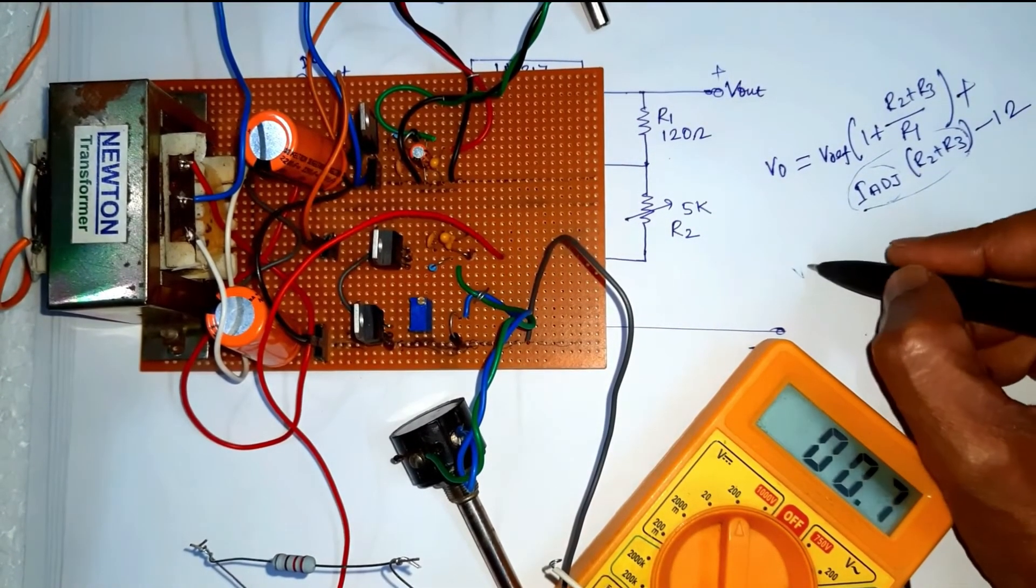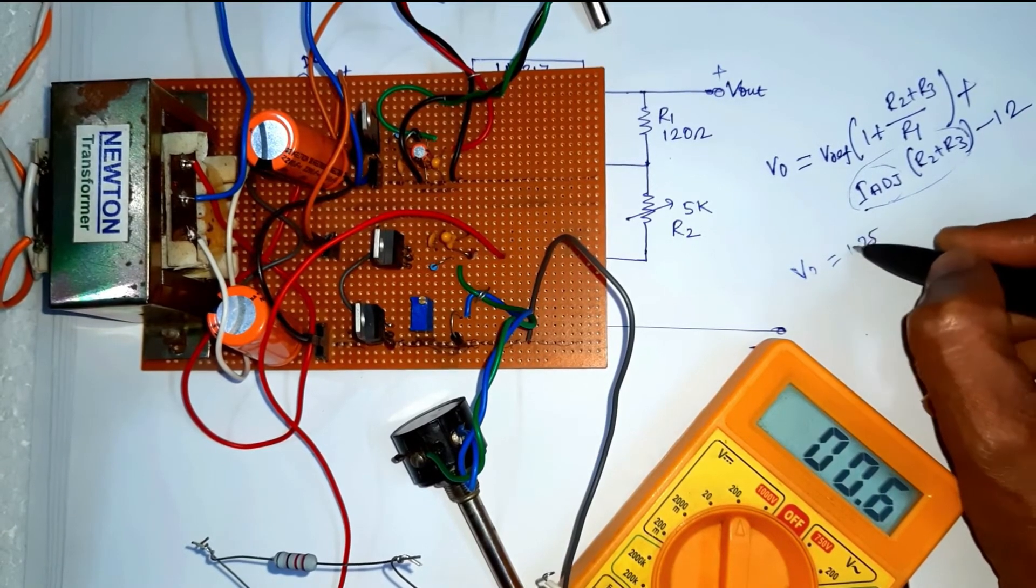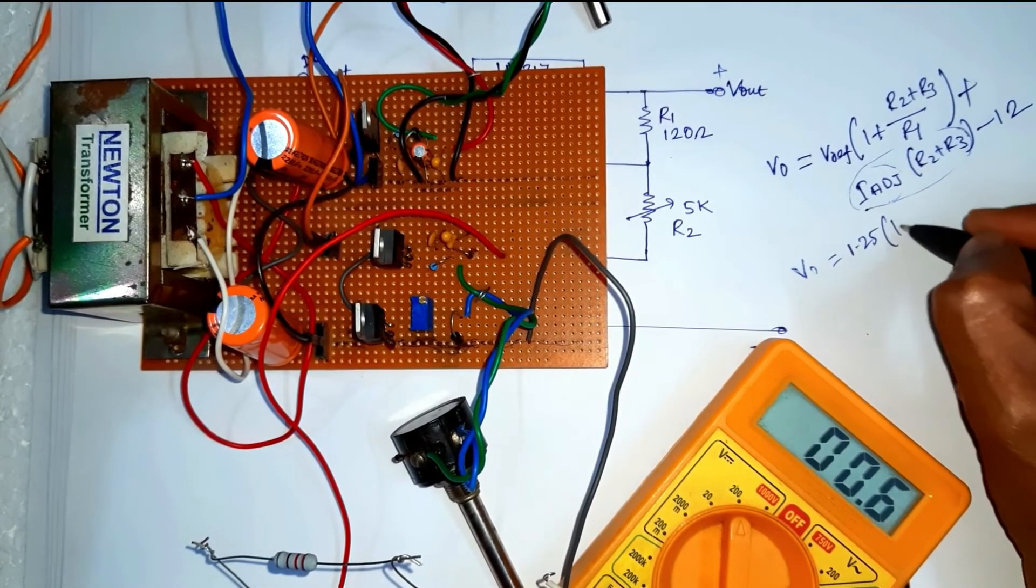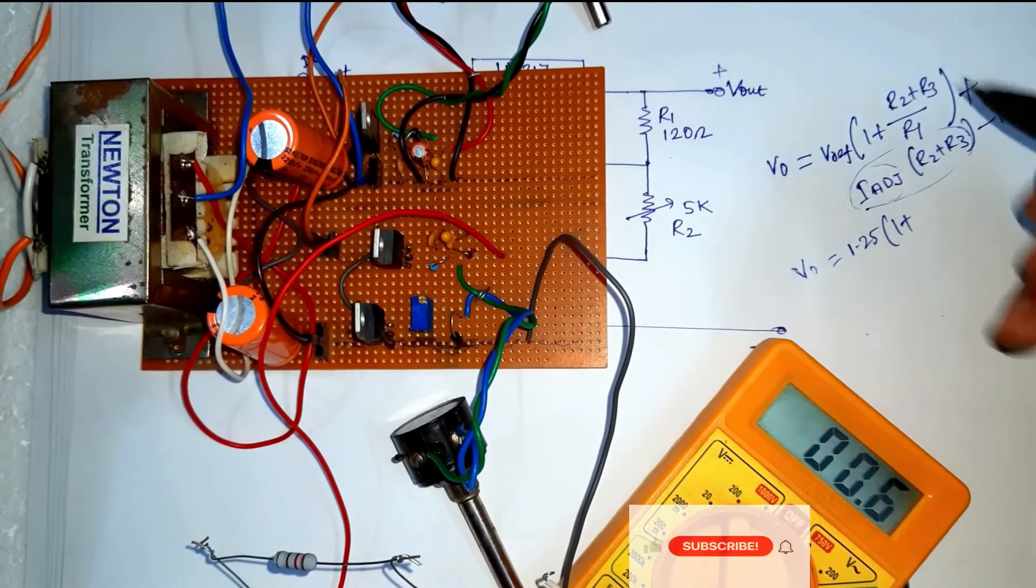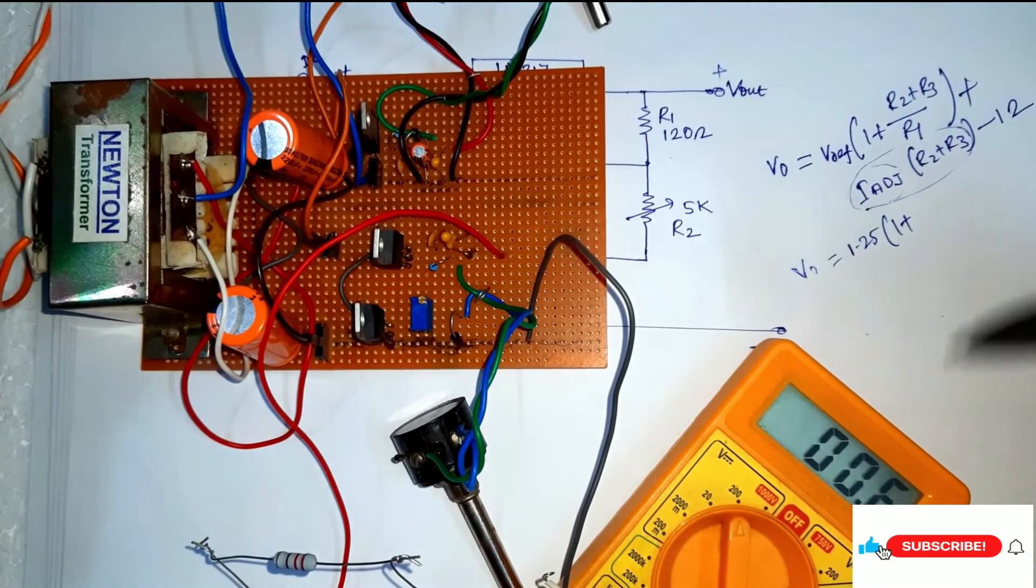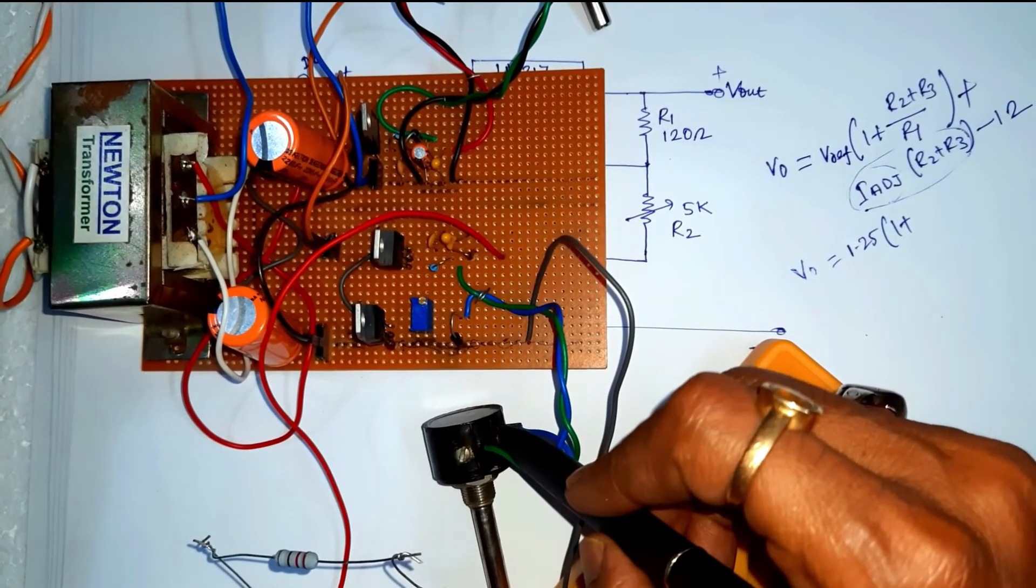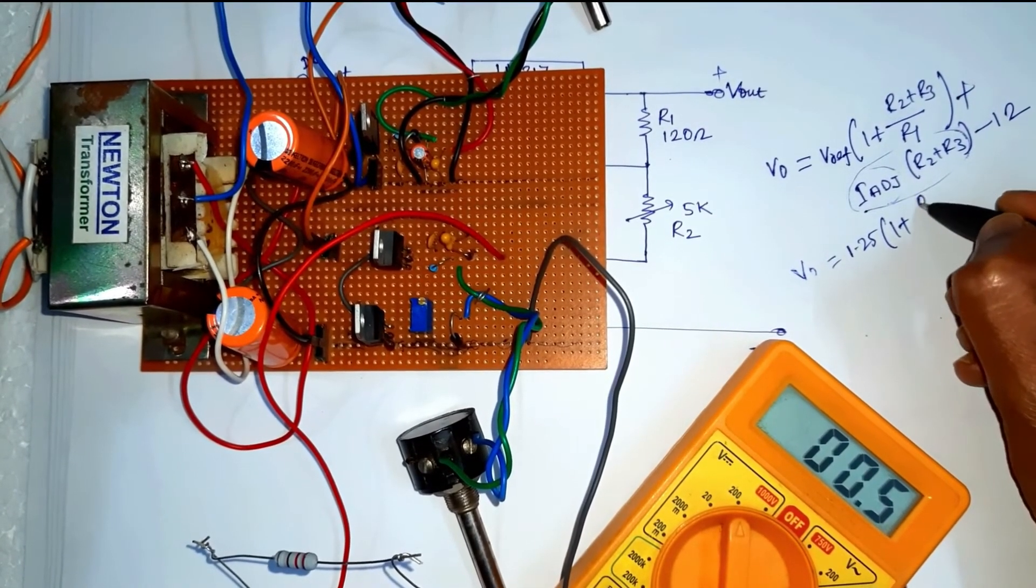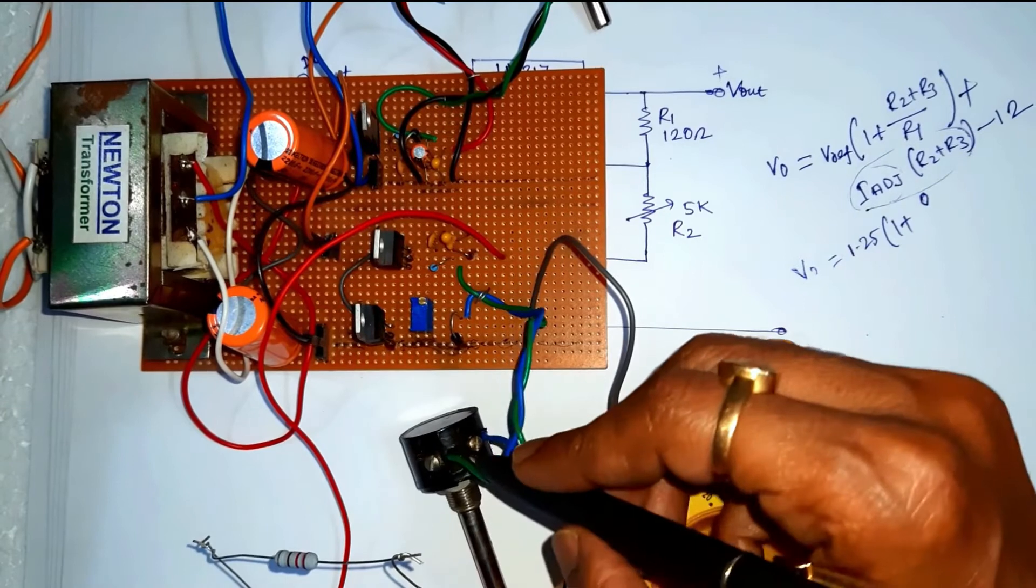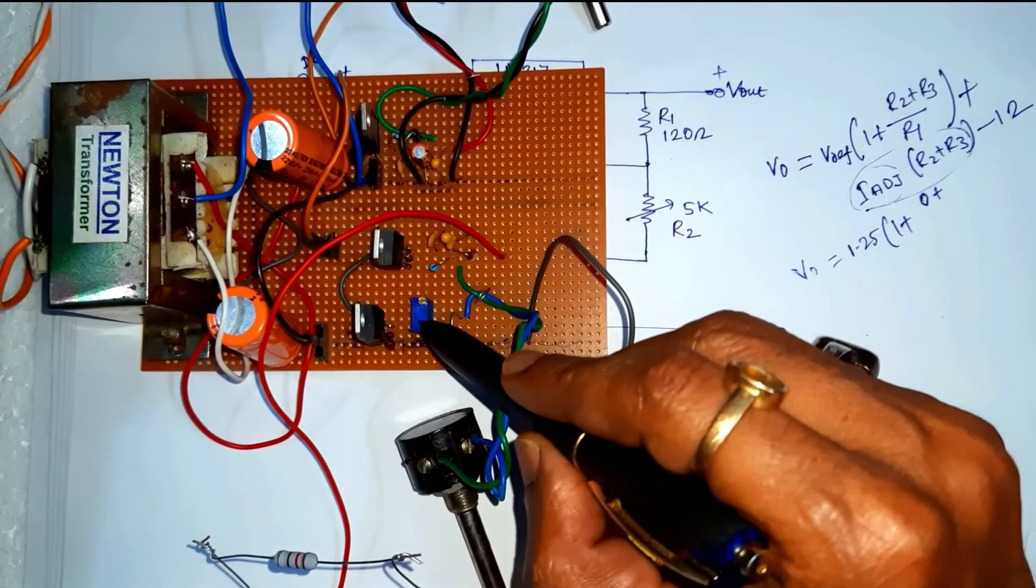So output voltage theoretically, V-reference that is 1.25 into 1 plus R2. R2, this is R2, 0 at initial condition. And R3, this is the R3.